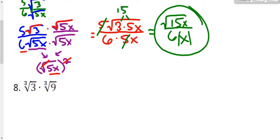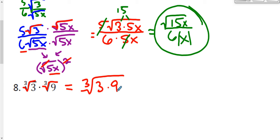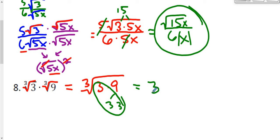In this problem, all I have to do is see what I can do to simplify. I have two cube roots that have the same index. So I can go ahead and combine those under one giant radical: the cube root of 3 times 9. I can multiply those together to get 27, which is a perfect cube. If I pull apart the factors and look for triples, I have three 3s, which means the cube root of 27 — or the cube root of 3 times 9 — is just 3. That's it for that question.